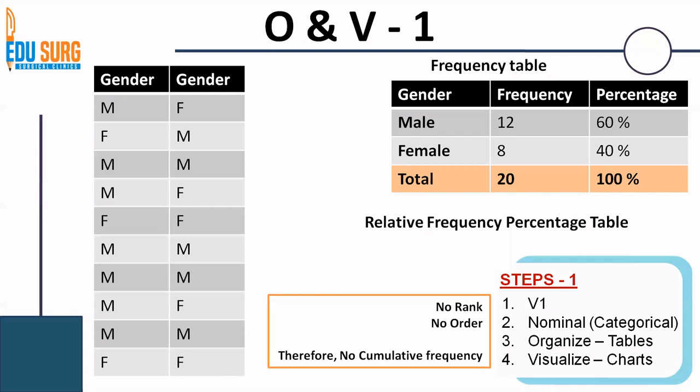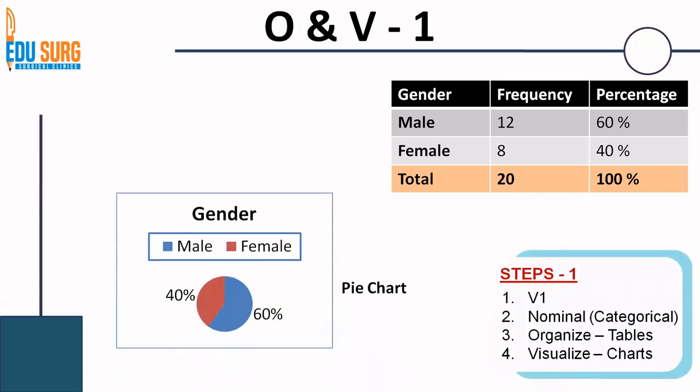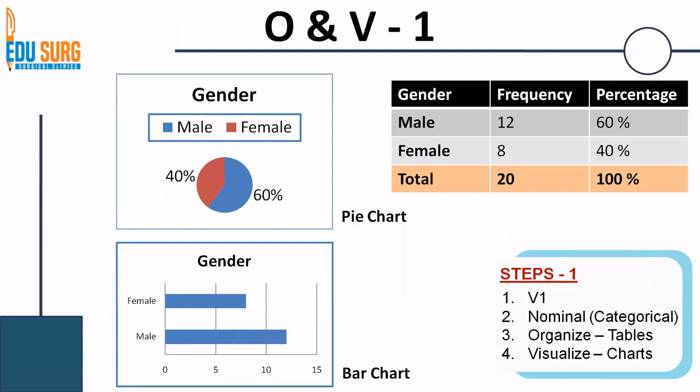We will see why this is important when we do the next example. Now, remember this data — 12 males and 8 females — when we will visualize or beautify this data. You can visualize it using a pie chart as seen here, or you can use a bar chart. A pie chart or a bar chart can be used to visualize nominal or categorical data. Notice this bar chart very carefully — there is a gap between the two bars, the male and the female. You can have a horizontal bar or vertical bar chart, so the x and y-axis are interchangeable. Remember this point because in upcoming talks you will see how to differentiate a bar chart from a histogram.